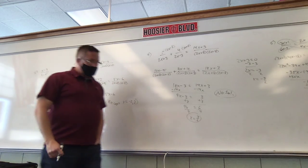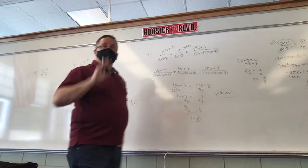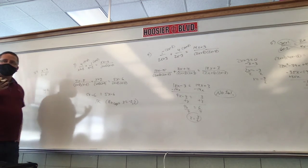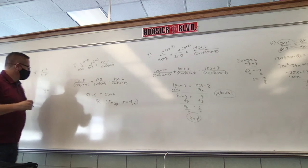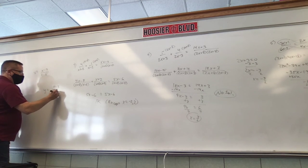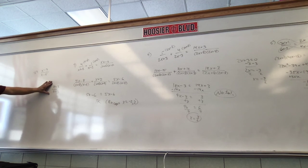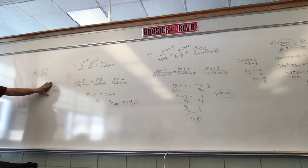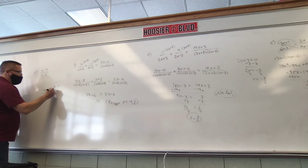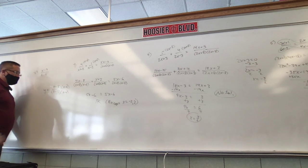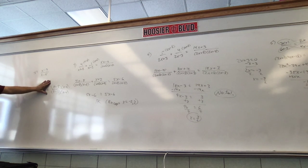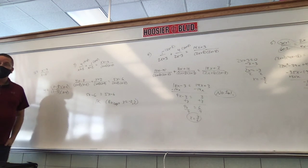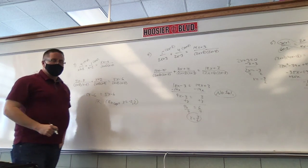You can plug in whatever you want except 2 or negative 2. Here's a simple example: when you divide something by itself, you get 1. So x minus 3 over x minus 3 is always 1, except when you plug in 3 — because then you get 0 on the bottom. Similarly, (x minus 3)(x minus 4) over (x minus 3)(x minus 4) is 1 for everything except when you plug in 3 or 4.